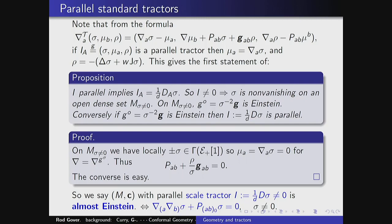What does it mean to say this tractor I is parallel? Here's a necessary condition: if I is parallel, then in particular μ has to be the derivative of σ. Also, if you trace the middle equation, you can work out what ρ is — ρ is minus the Laplacian of σ plus (n/2)Jσ. The important thing is that if I is parallel, then I is in the image of some differential operator, because μ is the derivative of σ and ρ is essentially the Laplacian of σ.